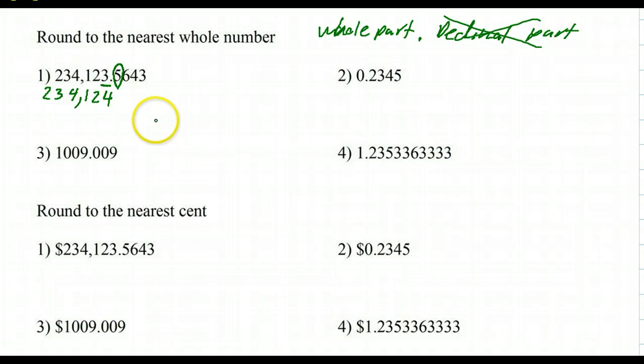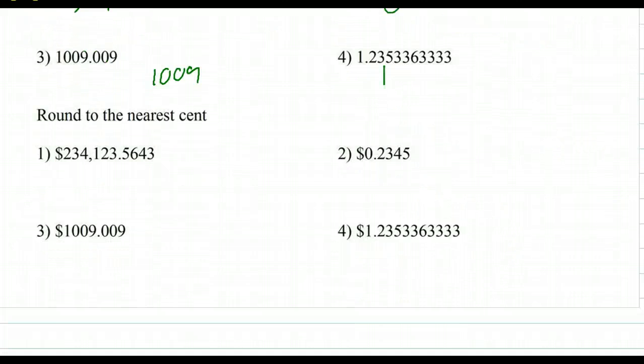All right, so try numbers two, three, and four. Hit pause now and try them. So those are the three answers you should have gotten: zero, 1,009, and one. All right, last thing for today.